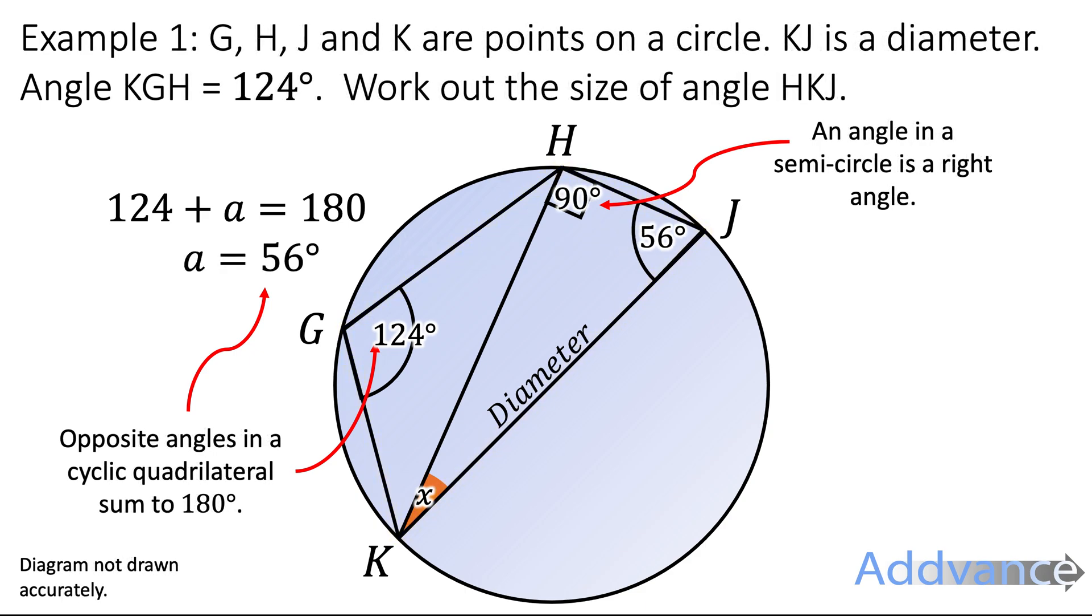We now know two angles of a triangle, 90 degrees and 56 degrees. We can work out the third just by making it equal to 180 degrees. So therefore x is 180 minus 146, which is 34 degrees and that is the final answer.